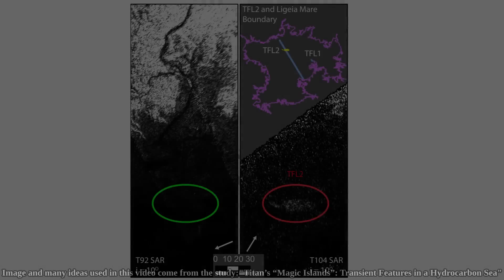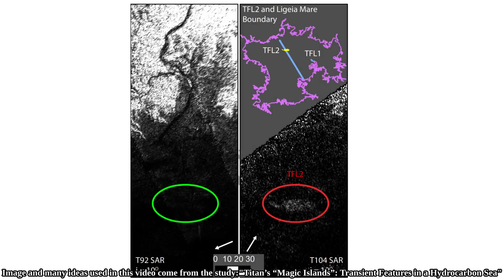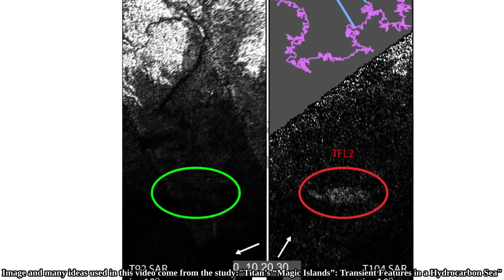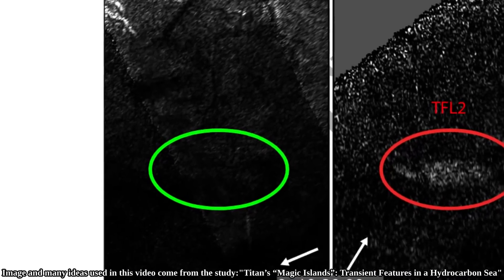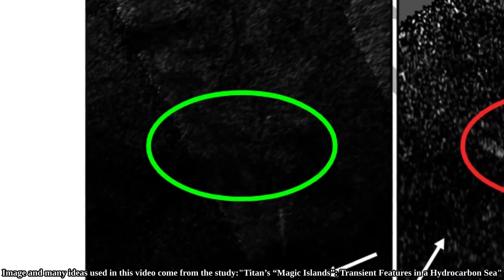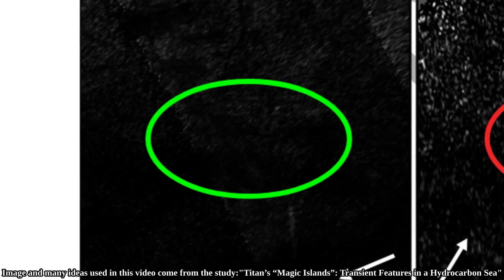Interestingly, there was also another location where a large feature suddenly appeared out of seemingly nowhere, also in the lake Ligeia. On the left is a photo captured by Cassini in July of 2013, and it shows no feature in the lake.